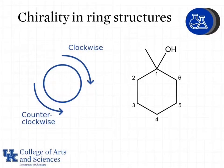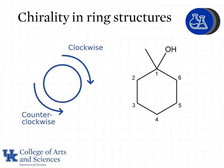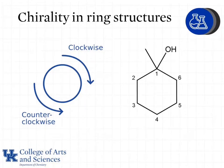In this lesson we're going to continue to talk about chirality, but now we're going to look at it in ring structures. The key thing to remember is that in ring structures we have to look at our groups a little differently — one of our groups will be going in the clockwise direction and the other group will be going in the counterclockwise direction.